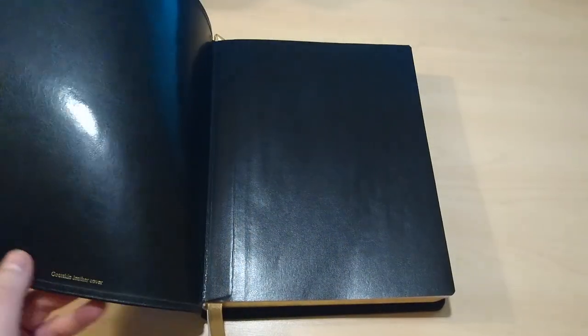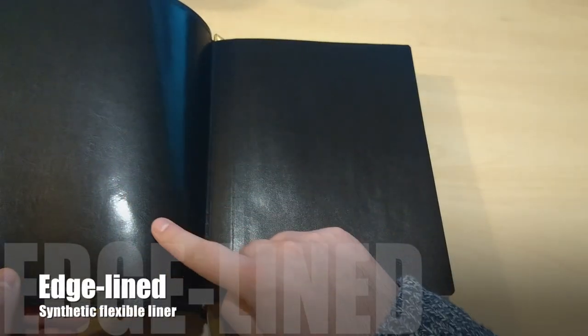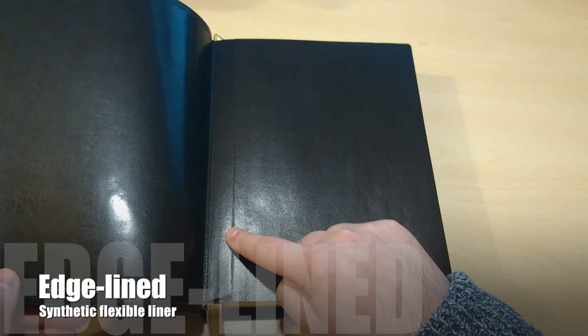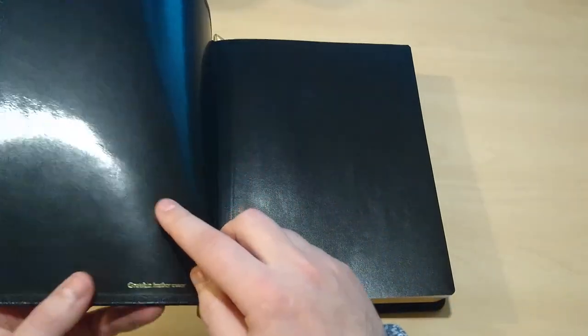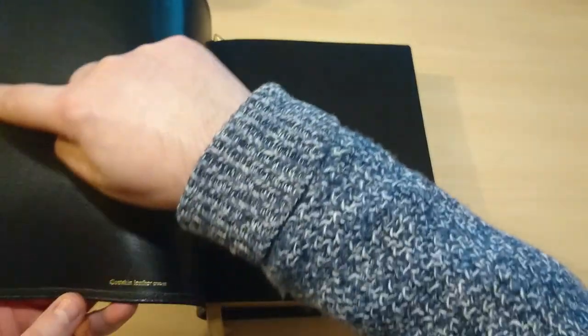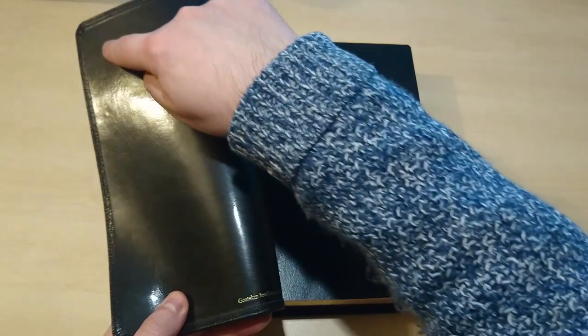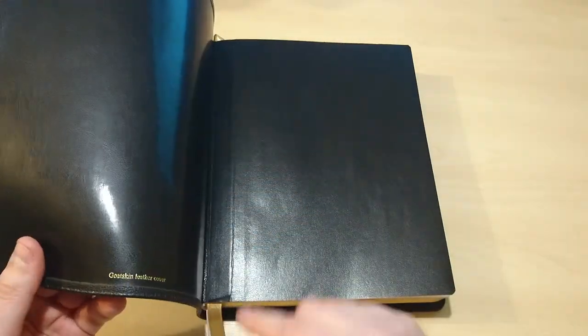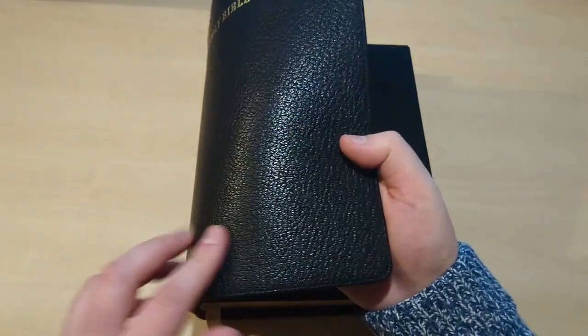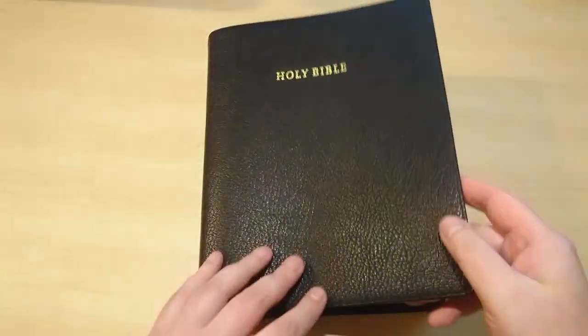Here's the Bible. If you open it up, you can see that it's edge-lined, but this is not leather—this is a synthetic material, very flexible. Nevertheless, it is stitched throughout the perimeter, all around the perimeter. But this part of the cover is actually goatskin leather, very nice indeed.